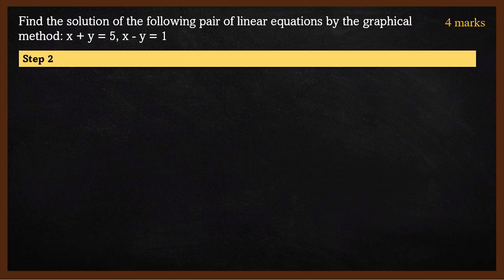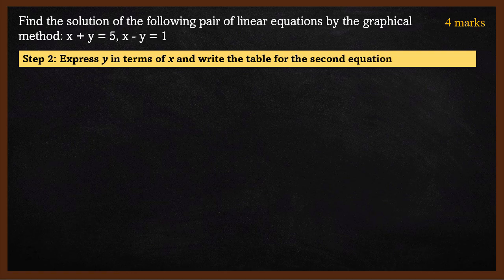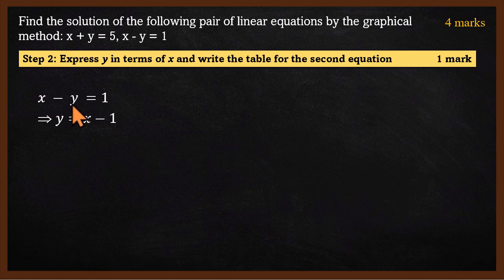The second equation is x minus y equals 1. We express y in terms of x: moving x to the right-hand side gives x minus 1 equals y, so y equals x minus 1.